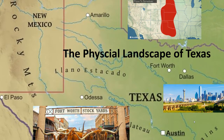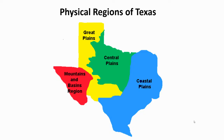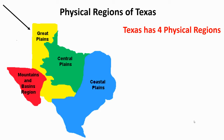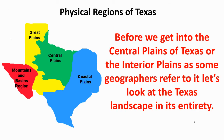Our physical region for today is the central plains. As we talked about yesterday, there are four physical regions in Texas: the coastal plains, the mountains and basins, and the Great Plains, which we talked about yesterday. Before we get into the central plains of Texas — or the interior plains, as some geographers refer to it — let's look at the Texas landscape in its entirety.